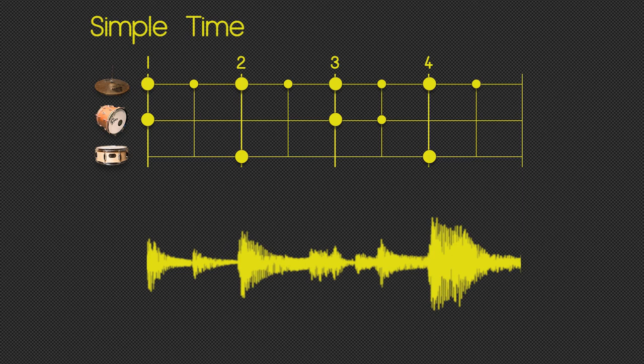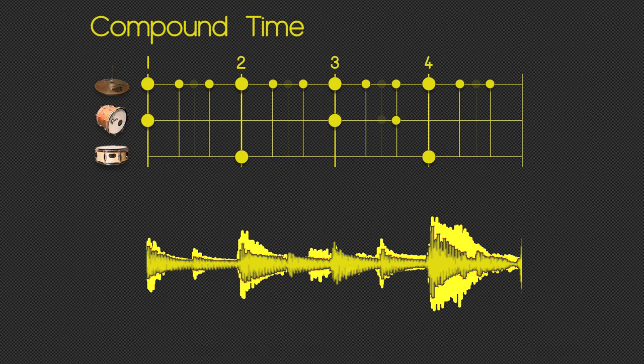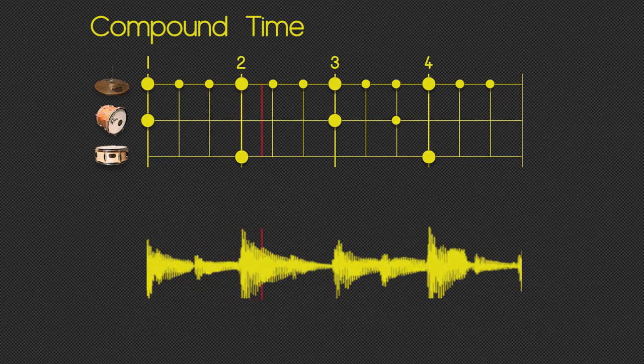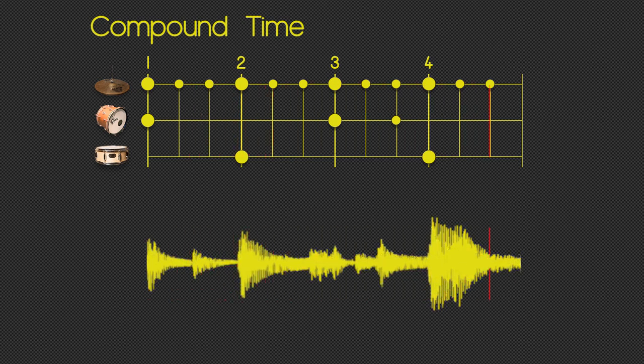So what happens if we take that guitar part but put it against a drum beat which is in compound time? Well, have a listen and see. Okay, so something's not quite right. Some parts are just a bit iffy, other parts are downright terrible. Now once in a while you do want to go for this effect of one instrument playing in compound time and the other one playing in simple time. But most of the time you don't, and you at least need to understand the difference.